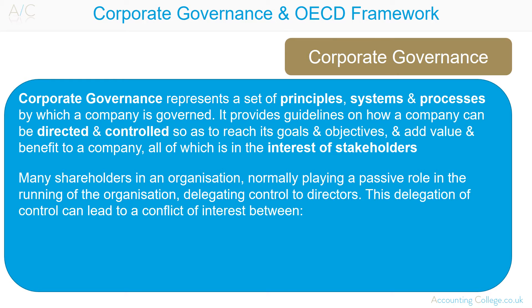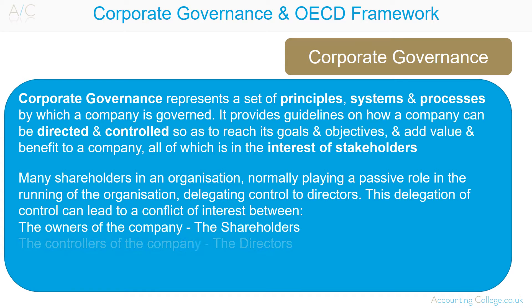The Cadbury Report 1992 defined corporate governance as: 'corporate governance is a system by which companies are directed and controlled.' Nowadays there may be many shareholders in an organisation, normally playing a passive role in the running of the organisation, delegating control to directors. This delegation of control can lead to conflict of interest between the owners of the company, the shareholders, and the controllers of the company, the directors.